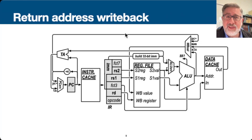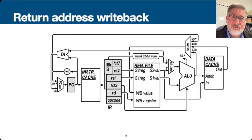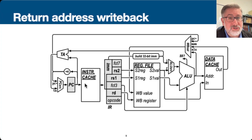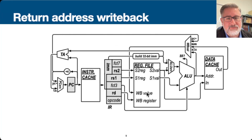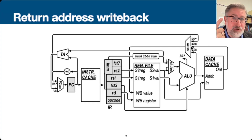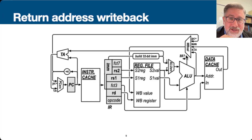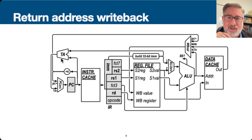We also need to calculate our return address. We take the program counter plus 4 and route that through as a third option for the writeback value — so the writeback can now be the ALU output, the memory output, or PC plus 4. When we're executing a jump-and-link instruction, we write PC plus 4 as the return address into the register file, while simultaneously updating the program counter to the new target address. That's the basics of the single cycle data path.